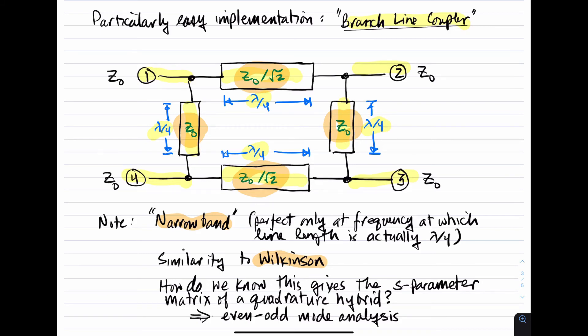One more thing to consider. How do we know that this particular structure gives us the S-parameter matrix of a quadrature hybrid? In other words, I simply presented this, I didn't derive it, I didn't analyze it. I simply say that this is a 4-port which is well-described as a quadrature hybrid.